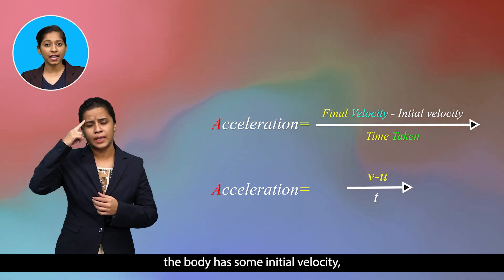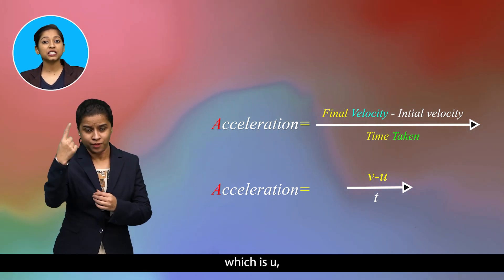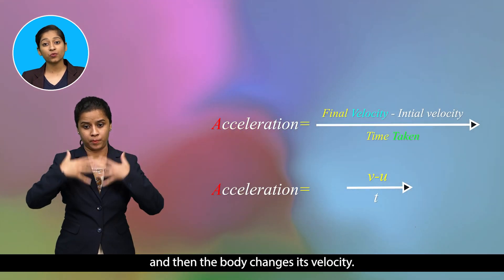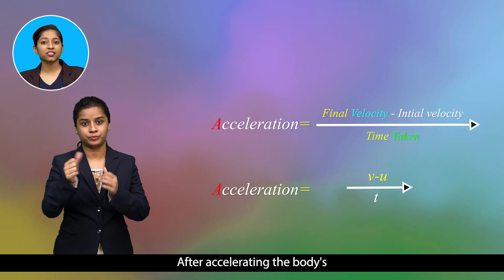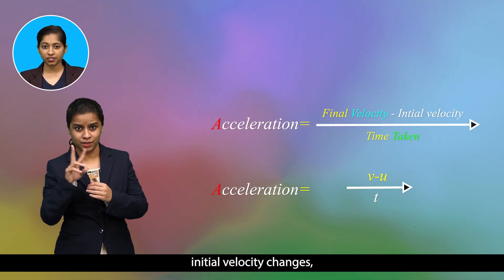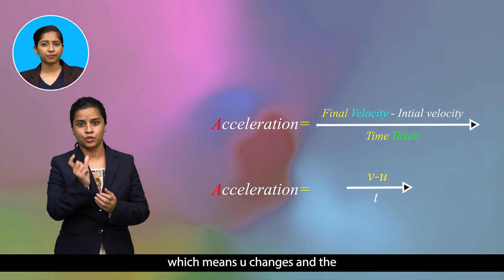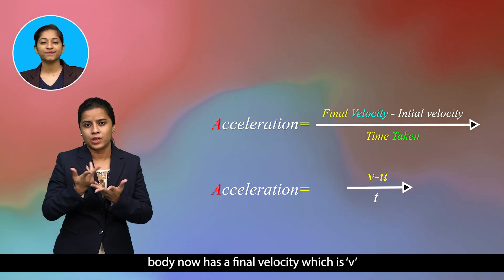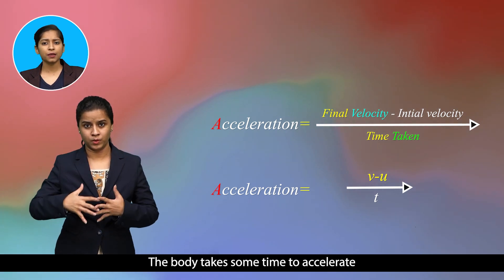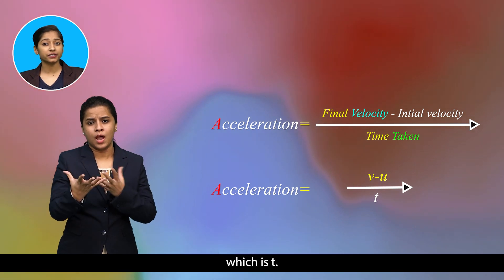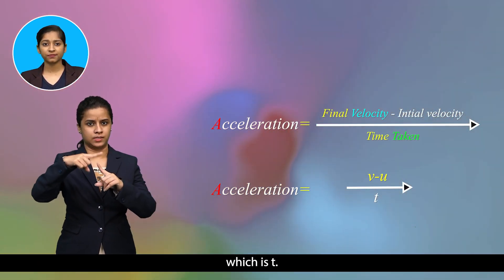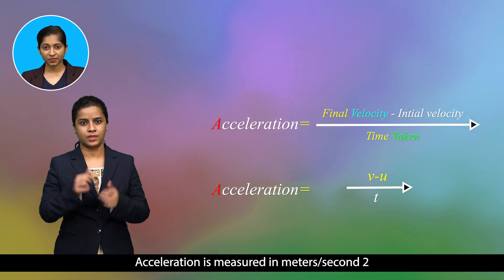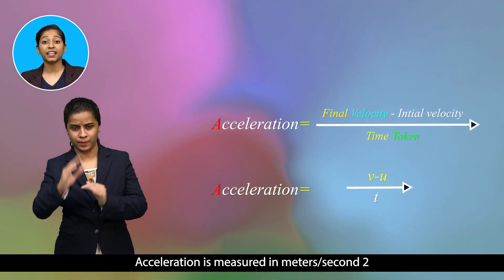Acceleration of a body is defined as the change of its velocity with time. Suppose the body has an initial velocity u, and then the body accelerates so that u changes and the body now has a final velocity v. The body takes some time t to accelerate, and the resulting acceleration is a. Acceleration is measured in meters per second squared in SI units.